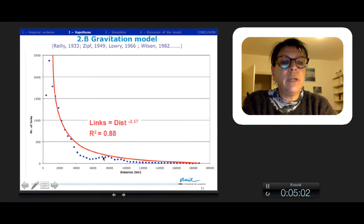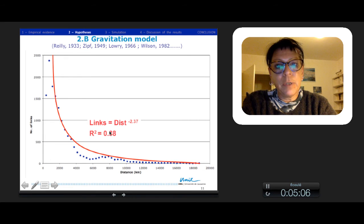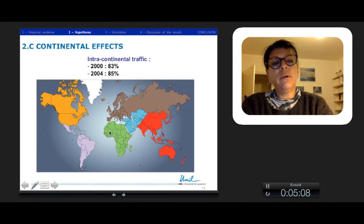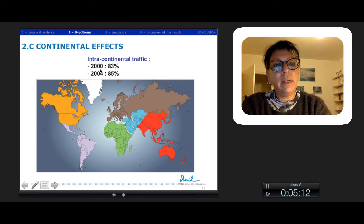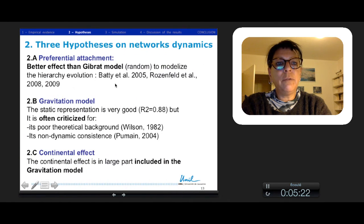We made an adjustment which is quite good. For continental effect, we know that it is increasing. Intracontinental traffic increased a little bit between 2000 and 2004, from 83% to 85%.